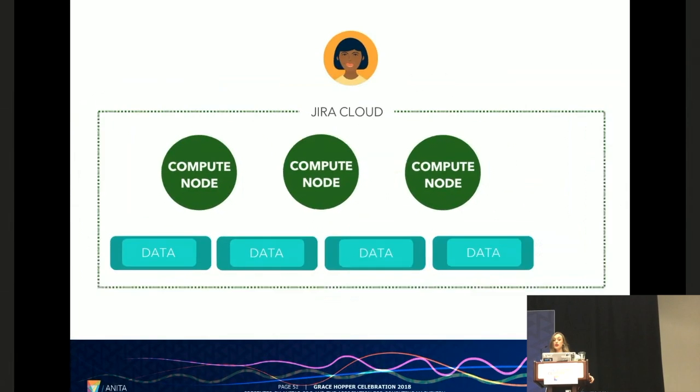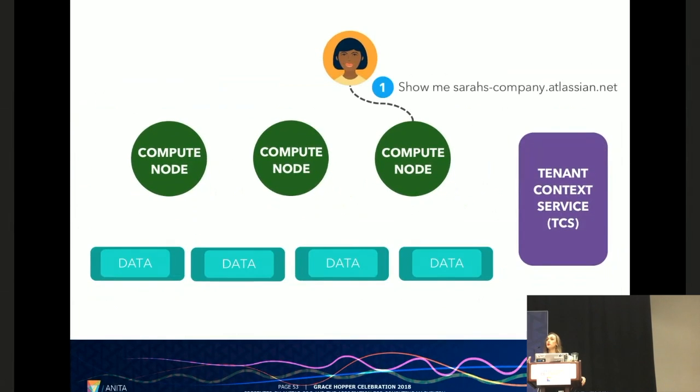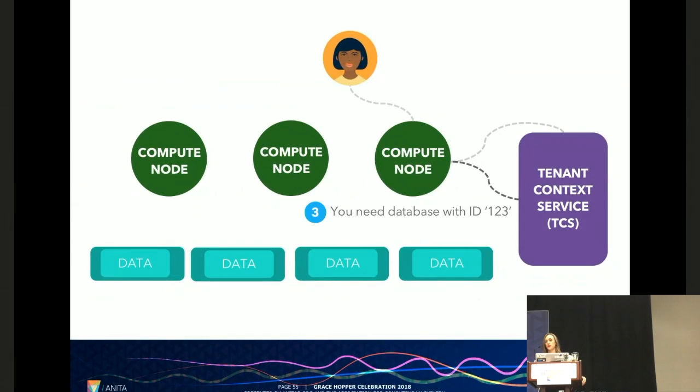To handle this we built a new service called the Tenant Context Service or TCS. And the idea with the TCS is that it would provide a lookup at runtime. For example if we were to have a tenant make a request one of the compute nodes would receive that request and then send it over to the TCS. And it would say okay show me sarahscompany.atlassian.net. The TCS would then receive that host name and because host names are unique it could perform an order of one lookup and get all the tenant configuration. So tenant configuration in this case is what type of products the tenant has, how many users, and the database details. So it sends the database information back to the compute node. And the compute node can now resolve the request.